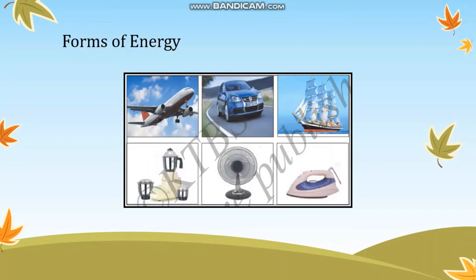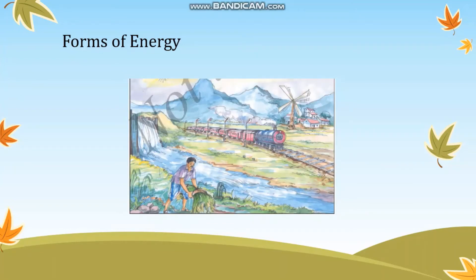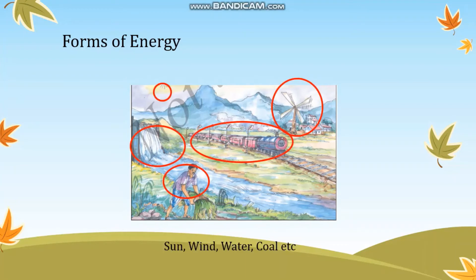In this image you can see activities happening on a day — the Sun, a windmill turning, a train, a waterfall, and a farmer working. Can you observe and point out the different forms of energy in this picture? The Sun gives out a form of energy, rotating a windmill depends on wind energy, trains can run on coal energy, and waterfalls also have stored energy.